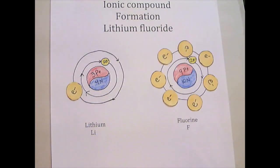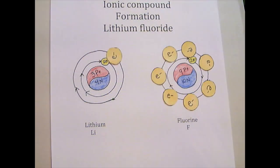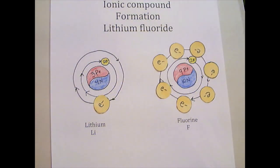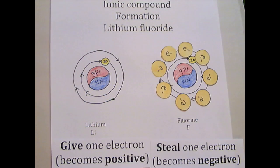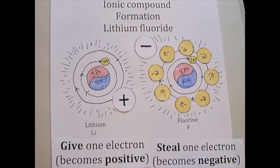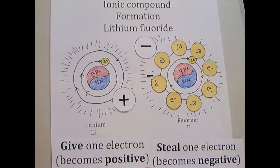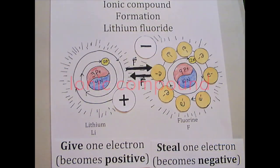Recall that atoms are more stable when their valence orbitals are full. Atoms can exchange electrons and become charged. When atoms do this and stay together because opposite charges attract, they are called ionic compounds.